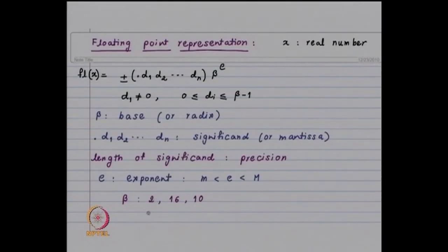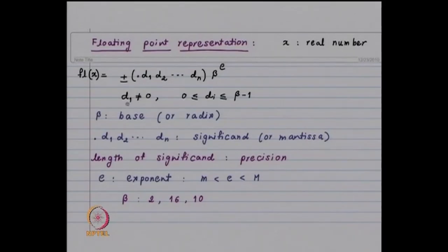If your beta equals 2, then the d_i's lie between 0 and 1. If we make the convention that d1 is not equal to 0, then we do not need to store it, because d1 will always equal 1.